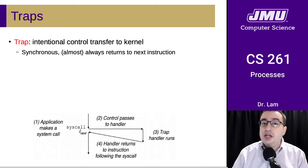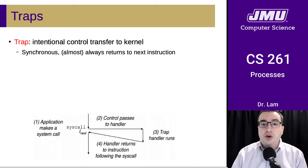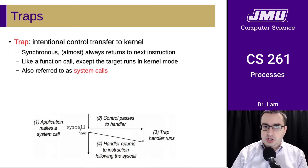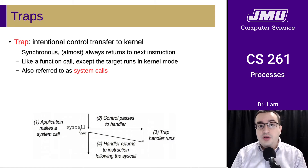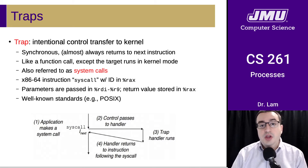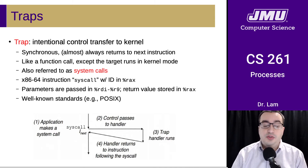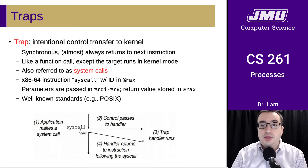The next kind of exception is a trap — an intentional control transfer to the kernel. This is synchronous, the result of the program choosing to transfer control to the kernel. Traps almost always return to the next instruction, making them somewhat like a function call, except the call goes into the kernel or operating system. These are also referred to as system calls. In x86-64, this happens using the syscall instruction, and the ID of the particular system call being invoked is passed via the RAX register. Parameters are passed using particular registers, and system calls can also return a value using RAX, just like a regular procedure call. POSIX is one well-known set of standards for how these operating system calls are supposed to work.